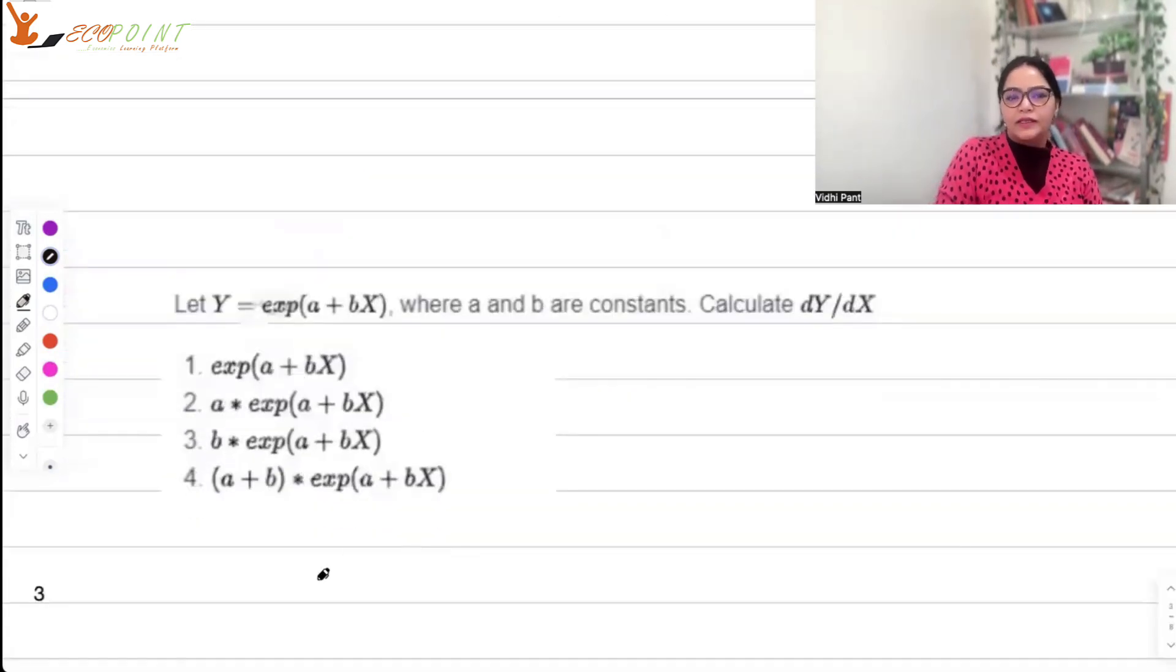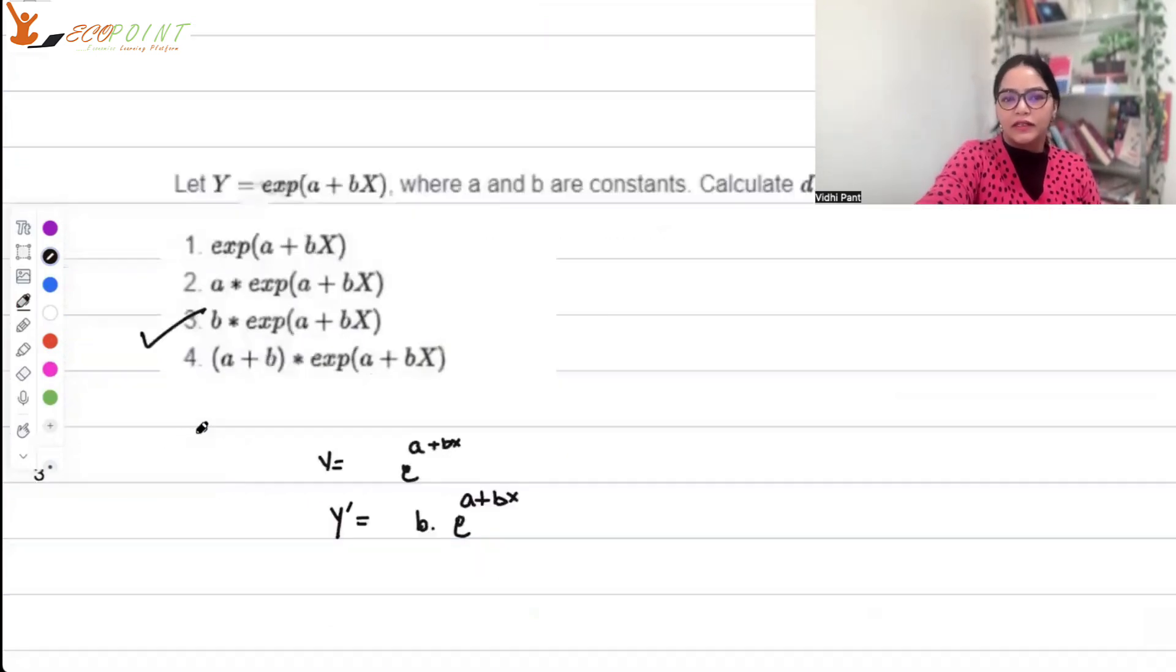Y = e^(a + bX). What is the derivative dY/dX? Y' = e^(a + bX), but due to the chain rule, b will be there. So that means this is the correct option.